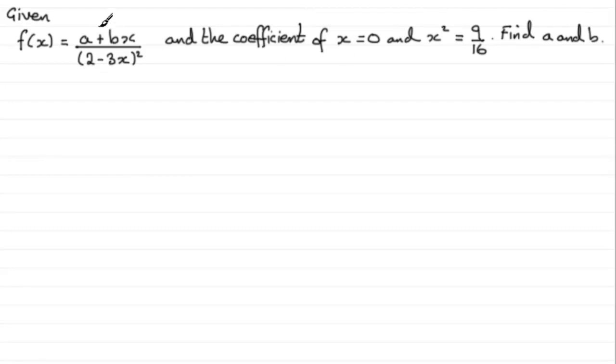To expand this binomially, I'll think of this as (a + bx) multiplied by 1 over (2 - 3x) all squared, which is the same as (2 - 3x) to the power minus 2.